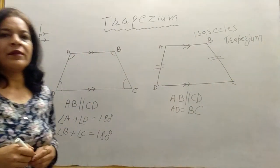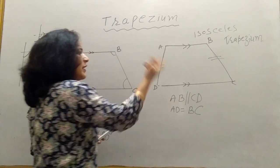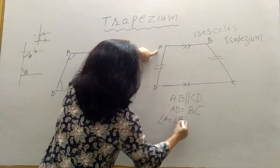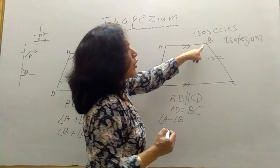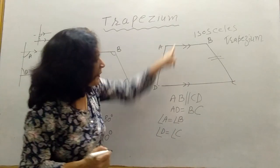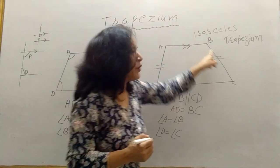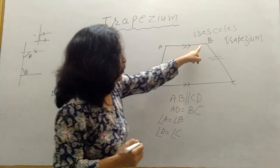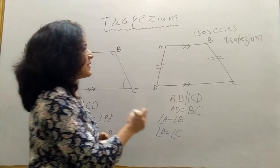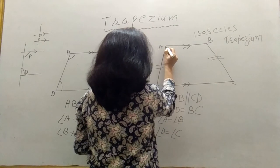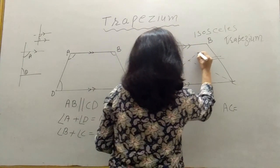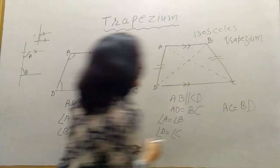In an isosceles trapezium, one pair is parallel and another pair is equal. Remember, base angles are equal: angle A is equal to angle B, and angle D is equal to angle C. One pair AB is parallel to CD, another pair AD is equal to BC, and base angles are equal. Also in an isosceles trapezium, the diagonals are equal — diagonal AC is equal to diagonal BD.